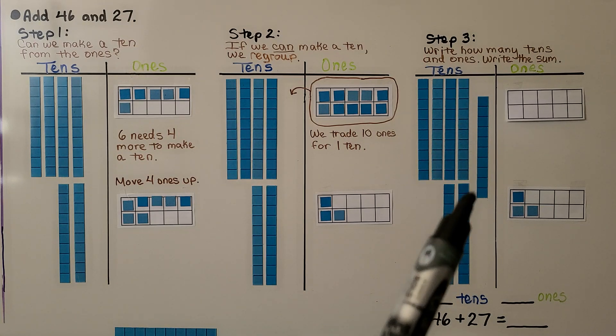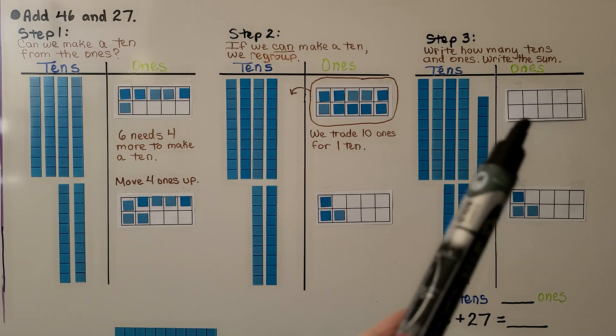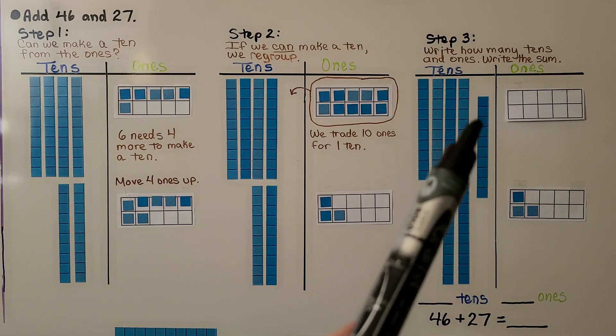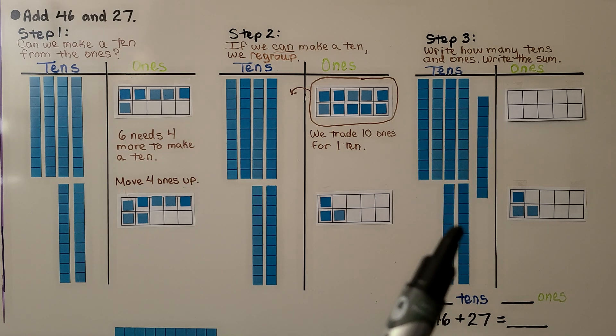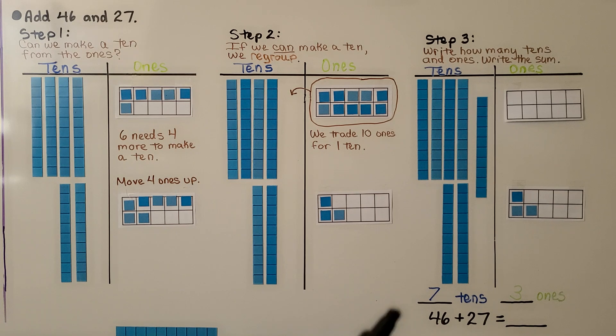Then we'll have a ten and we'll have three ones left over. And we can trade these ten ones for one ten. We put the one ten here. Now they're gone because they became a ten. We have one, two, three, four, five, six, seven tens. Three ones, that means forty-six plus twenty-seven is equal to seventy-three.